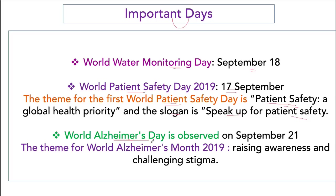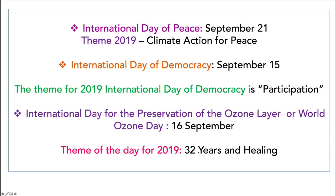World Alzheimer Day — Alzheimer disease is a very important neurological disease of the brain — was on September 21st. This time the theme was 'Raising Awareness and Challenging the Stigma.' International Day of Peace is also 21st of September. The theme this time was 'Climate Action for Peace.' It is one of the most important days — remember it.